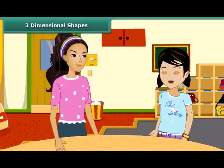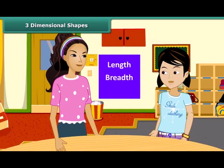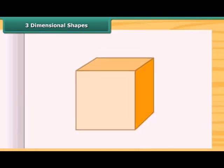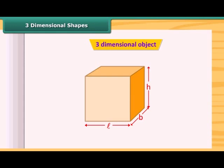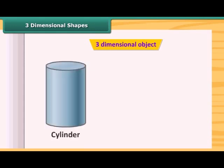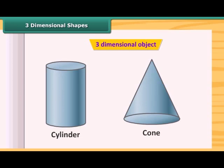What are three-dimensional shapes? A solid object having three measurements like length, breadth, and height are called three-dimensional objects. Look at this cuboid. It has length, breadth, and height, so this is a three-dimensional object. The cylinder, cone, etc. are three-dimensional figures.